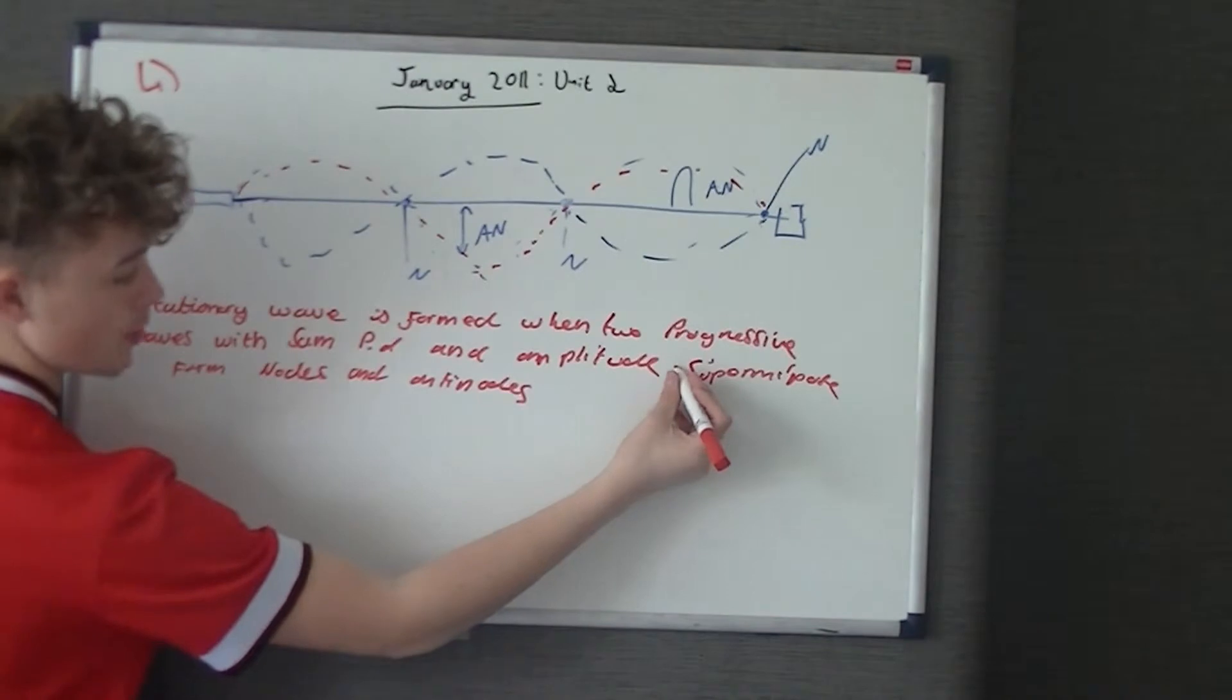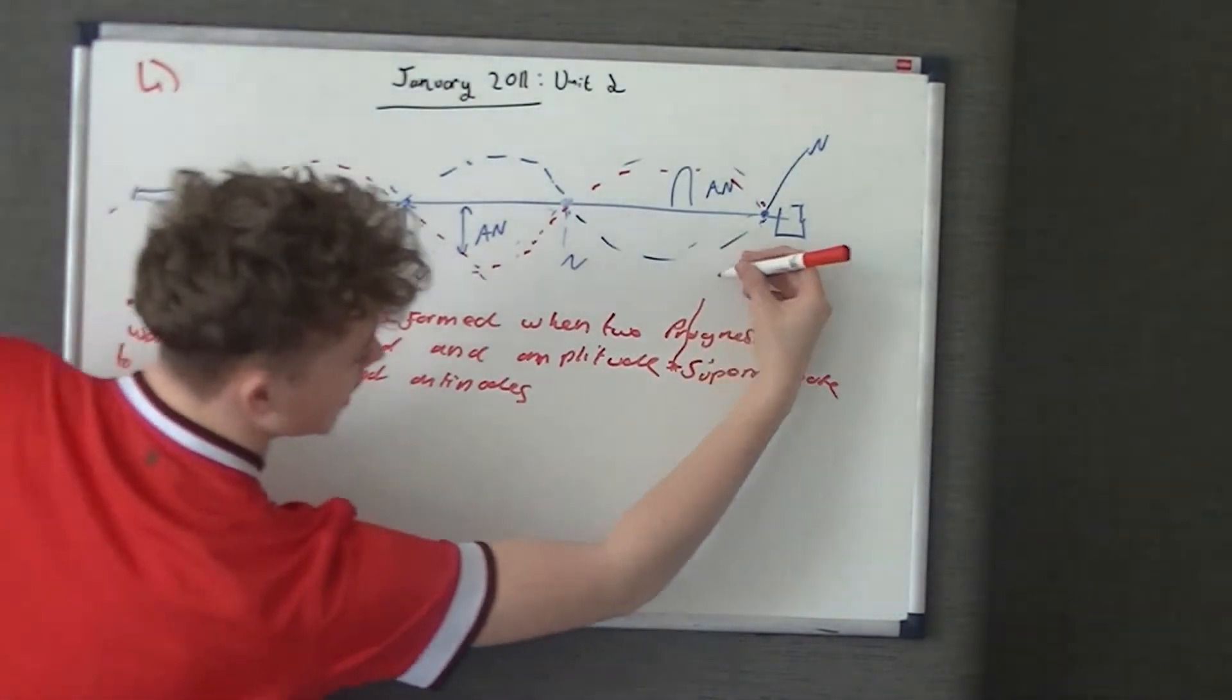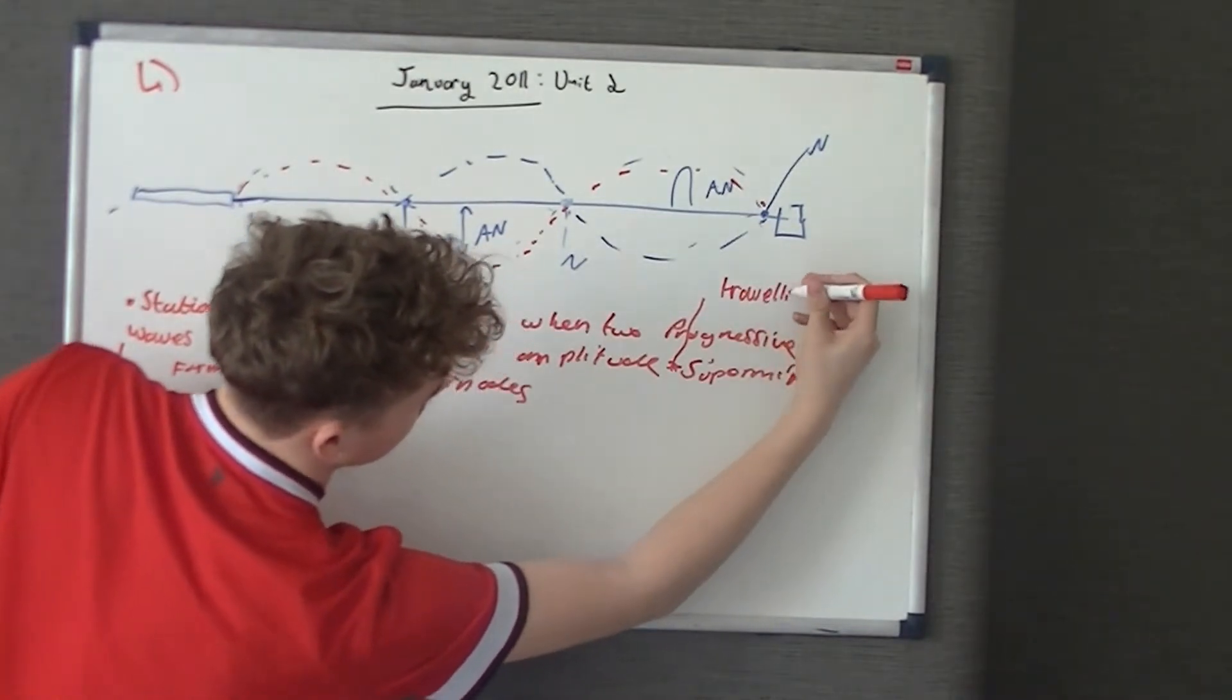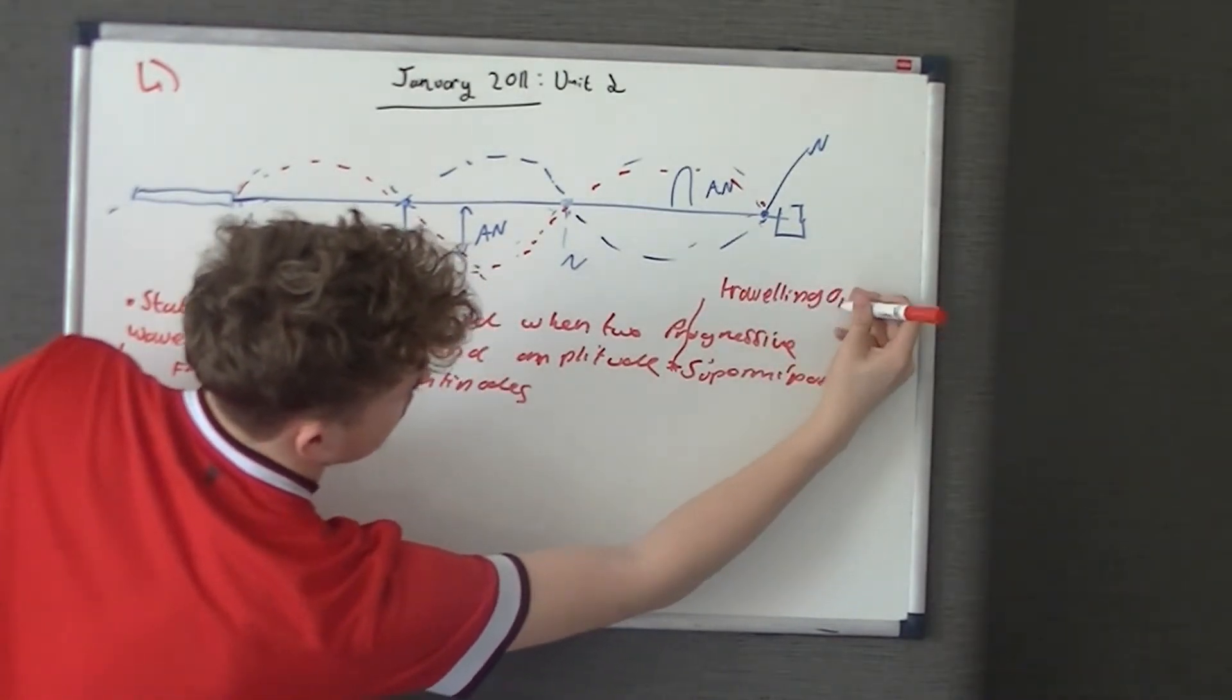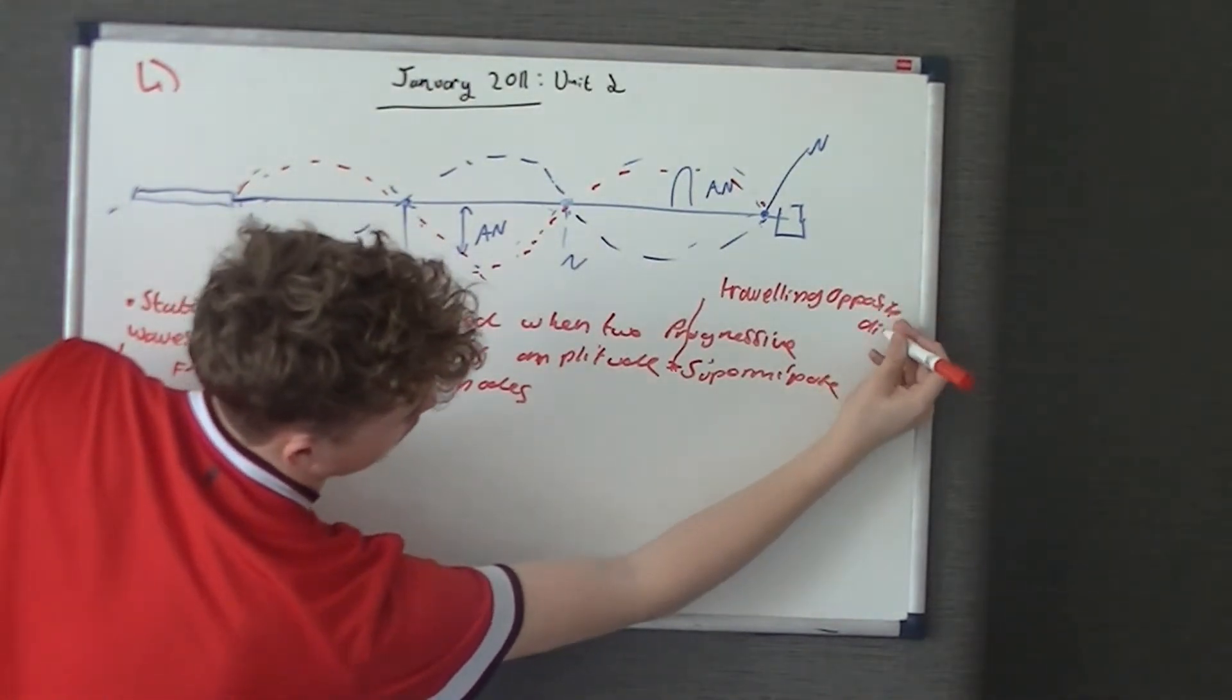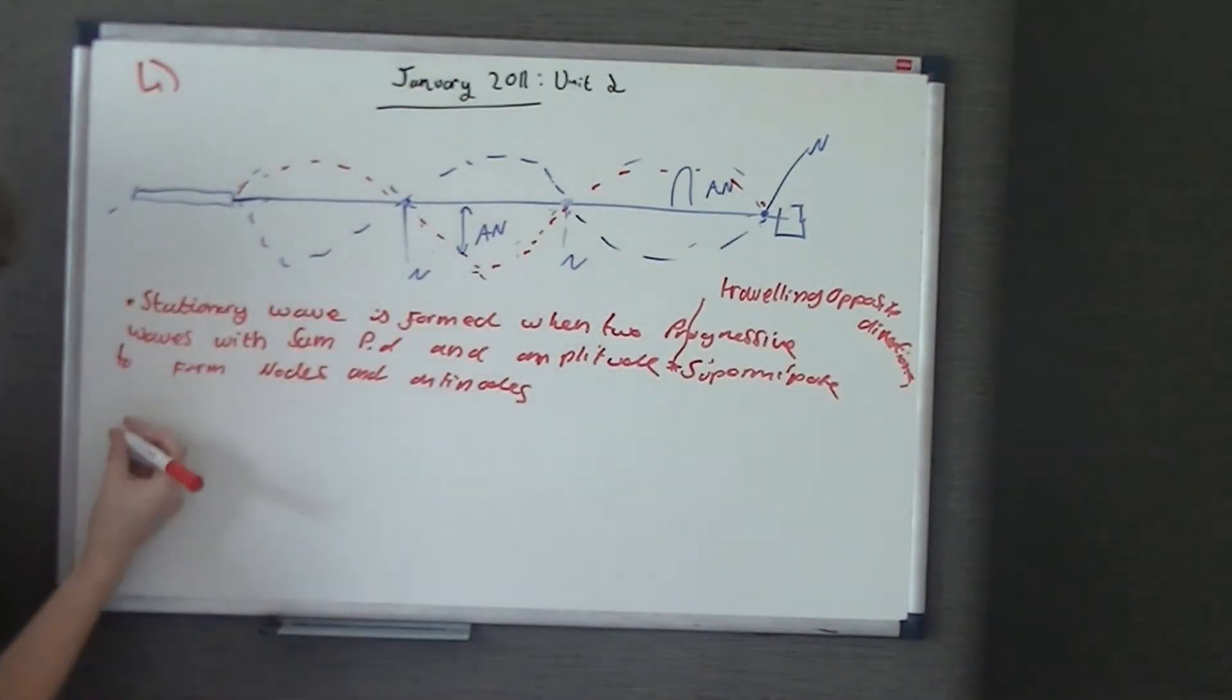Sorry, same PD and amplitude. When I put same PD and amplitude, I should put travelling in opposite directions. So I'll just put travelling in opposite directions. Obviously, I'm not going to get my mark here, because I'm messing it up, but you just put it in one sentence.